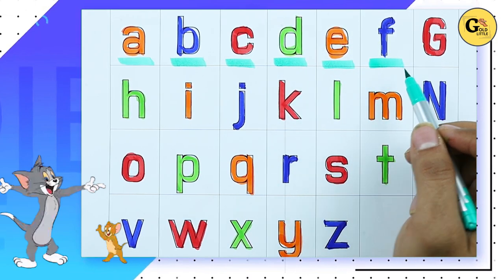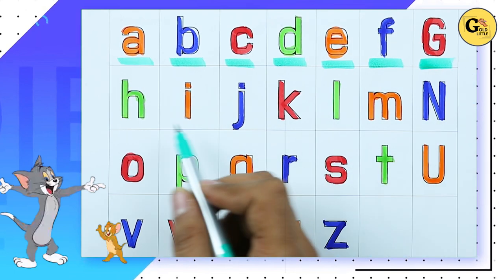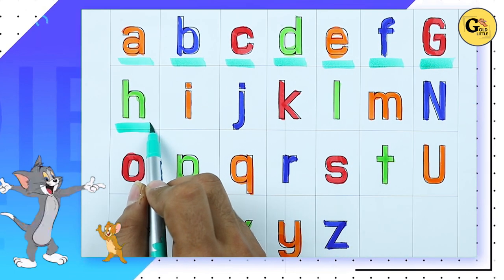F, F for fish. G, G for goat. H, H for hen.